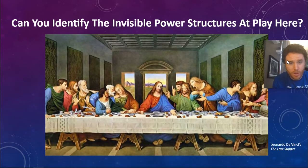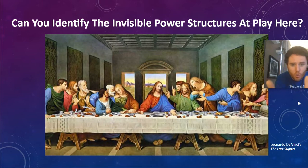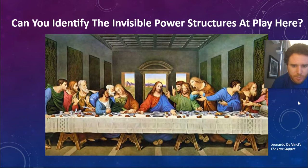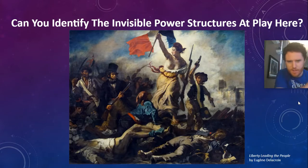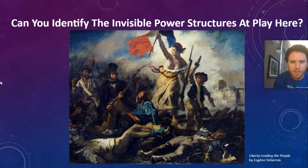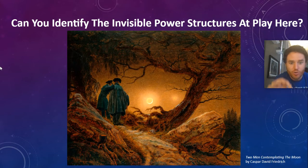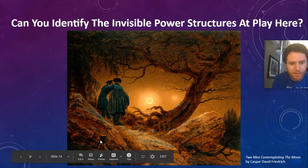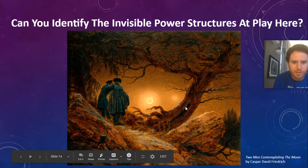Can you identify the invisible power structures at play in The Last Supper — one of the most famous events in Western culture, painted by Leonardo da Vinci? What power structures are at play? Judas, Jesus, Christianity, Roman governments. Can you identify the invisible power structures in Liberty Leading the People — representing the French Revolution? The proletariat. The bourgeoisie. What about this other painting — the natural versus the artificial? What cut down that tree trunk — was it a man-made axe? What about the natural world, the sun, planet Venus? What power structures influence the elements of a text like this?